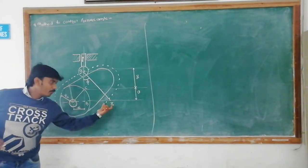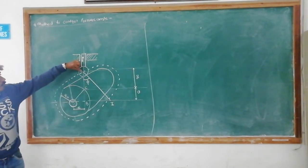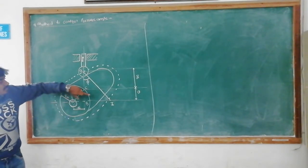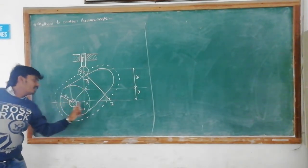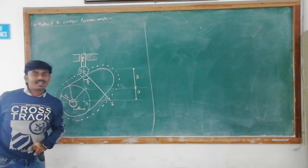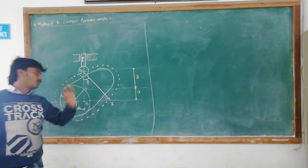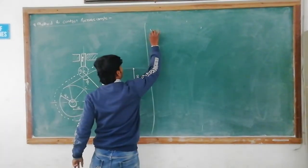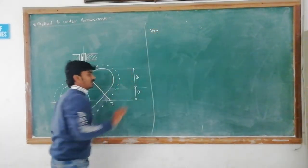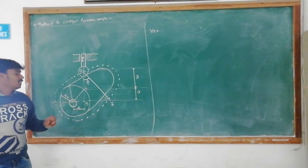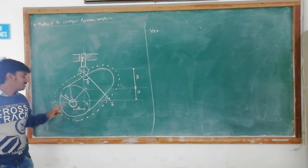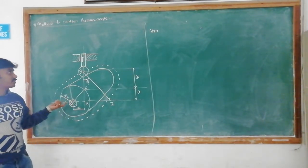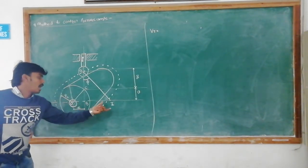How do we obtain point I? When we extend this normal to the pitch curve and it intersects the horizontal axis of the cam, we get the instantaneous center I. The instantaneous velocity Vr is equal to O to I into ω.